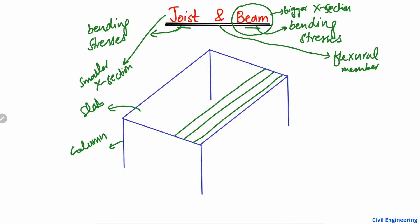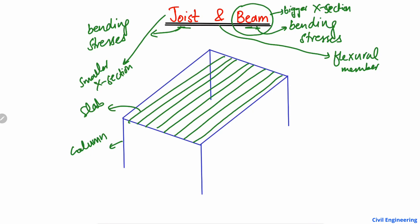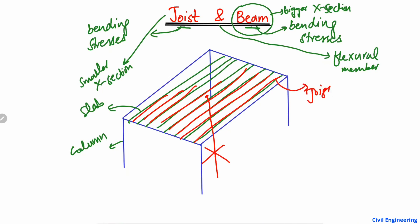The joists are small in cross-section, and their purpose is to take the bending stresses. They are provided in order to avoid placing a column in the middle. Architects mostly try to avoid this column because it does not look good. So to avoid a column in the middle of the hall, engineers provide small beams along the length of the slab. These small beams are known as joists — they are really small in cross-section.